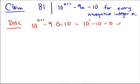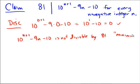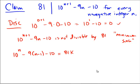The idea behind a minimal criminal or minimum counterexample proof is that we assume this statement fails for some non-negative integer n, but not one that we know. So we say there's some n where 10^(n+1) - 9n - 10 is not divisible by 81, and we say it's the minimum such. But that means taking one step back — looking at 10^n - 9(n-1) - 10 — this would be divisible by 81 since it's less than the minimum place where it failed. So this equals 81k for some integer k.